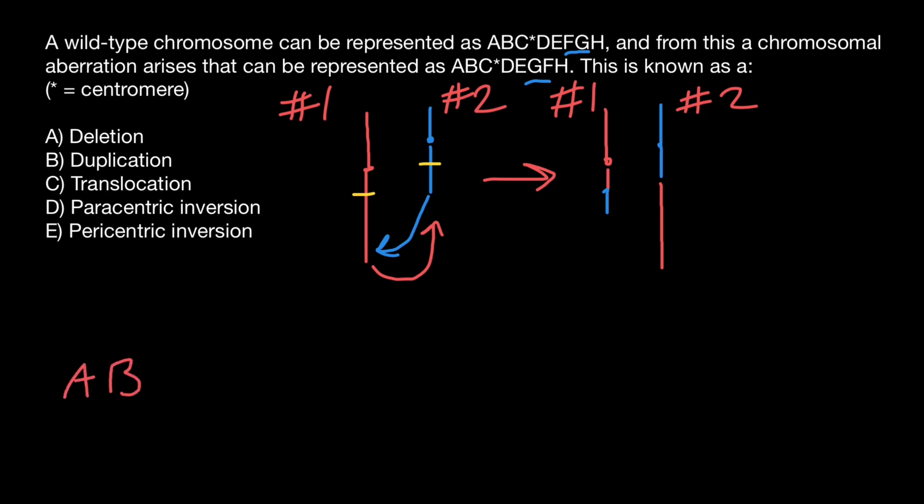We start with chromosome that has a sequence A, B, C, centromere, D, E, F, G, H. Here is the variant which described in our problem today. We have inversion.